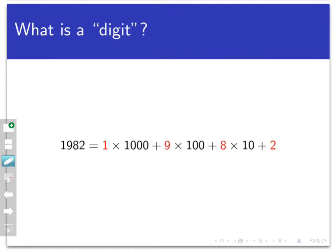Before we jump into a proof, we need to be clear about what exactly we mean by a digit. Every integer can be expanded in base 10 — written as a sum of powers of 10 multiplied by numbers between 0 and 9. For example, 1982 is 1 times 1,000 plus 9 times 100 plus 8 times 10 plus 2. You have the ones digit, the tens digit, the hundreds digit, and the thousands digit — you learn that in second or third grade.